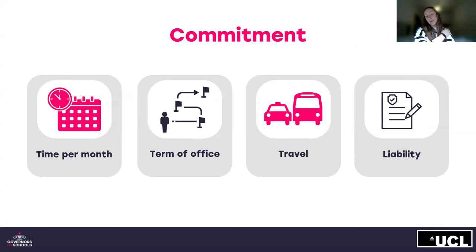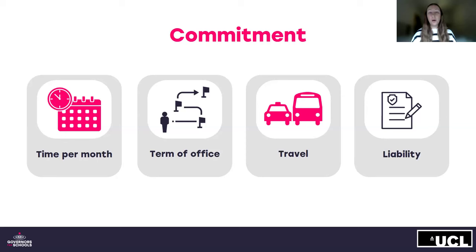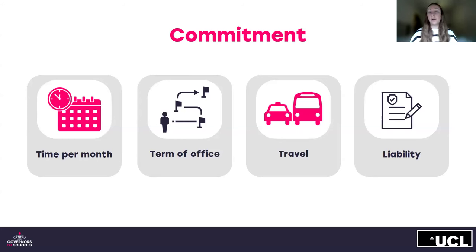Just to touch on commitment — in regards to how much time per month you might spend on the role, this can obviously differ, but based on feedback from our volunteers, the governor role takes on average seven hours per month. This can vary depending on whether you take on additional roles such as chair, but most boards will meet once per half term or so. You'll also need to factor in time to prepare for meetings, visit the school, report back on your findings, as well as getting involved in school celebration events. It may be that one month you spend more time and one month you spend less, depending on what is going on in the school at that specific time.